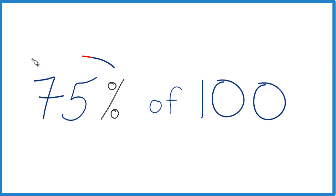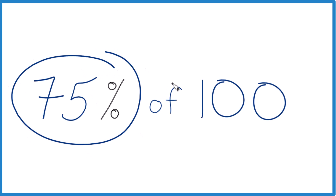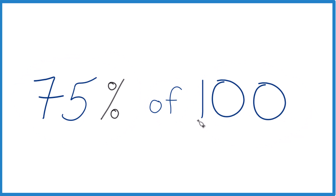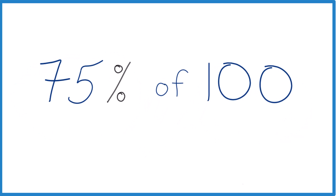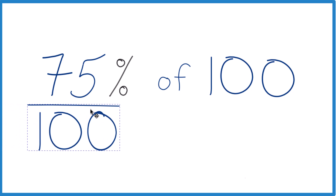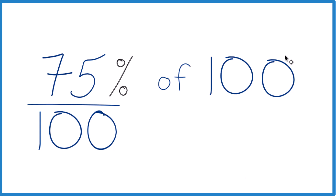So if you need to take 75% of 100, here's how you can do it. First off, 75% — when we talk about a percent, we're talking about per 100. So we have 75 parts per 100. So 75% of 100 is just 75.